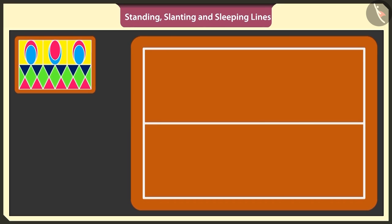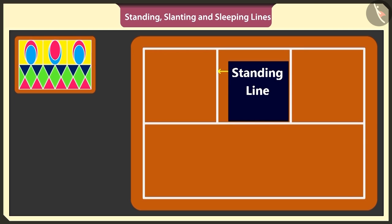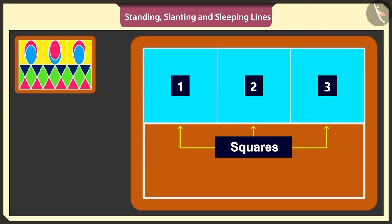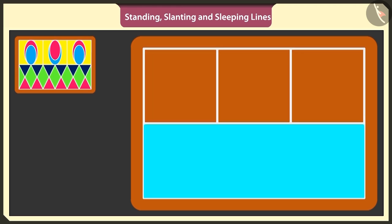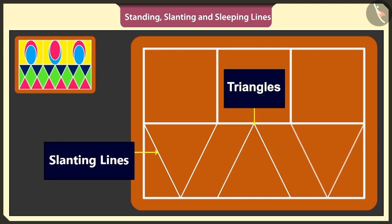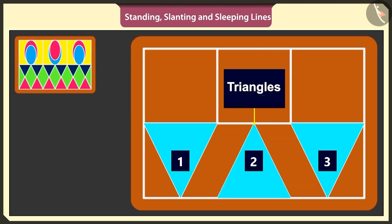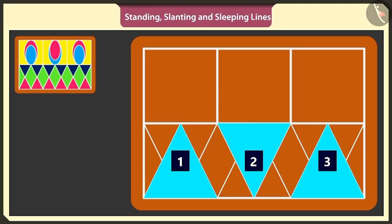Yes, now we have two rectangles. Draw two standing lines in the above rectangle and make three such small squares. Now under these three squares, I will draw three triangles, just like this. I will use slanting lines to make inverted triangles, just like this.